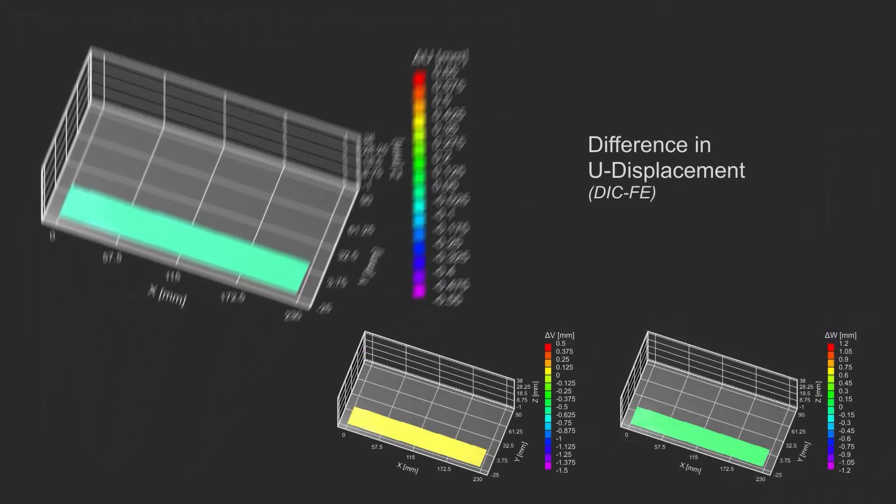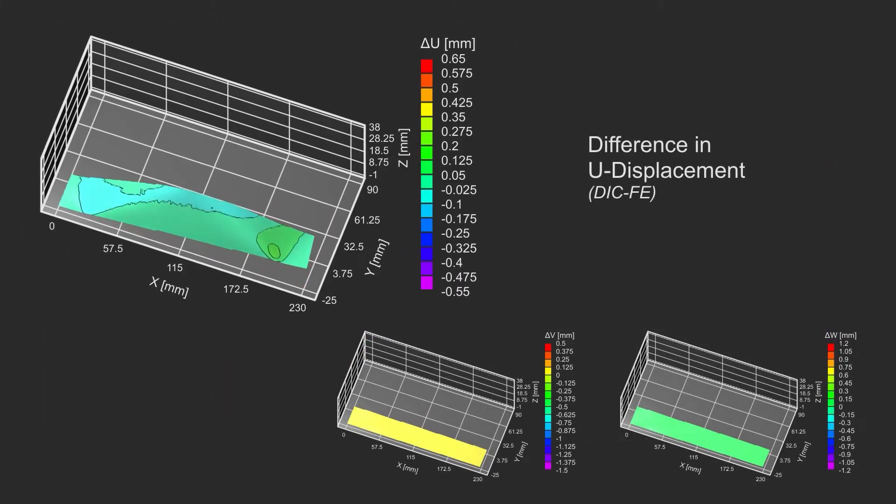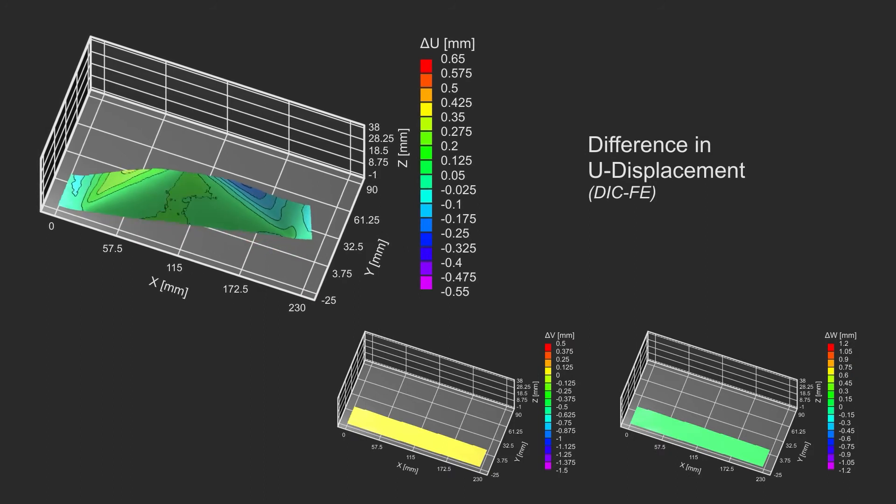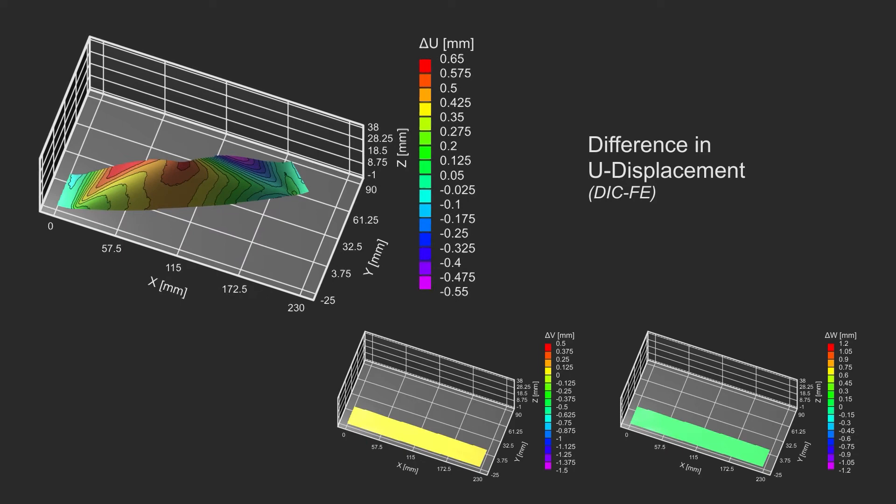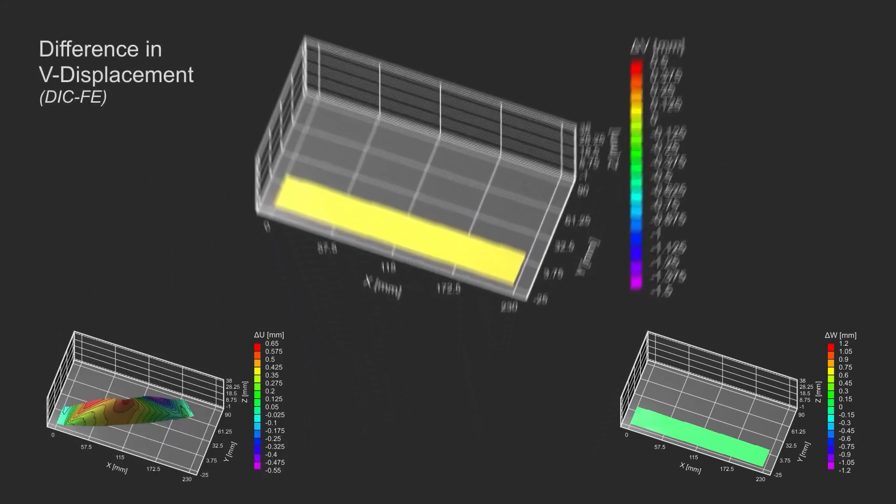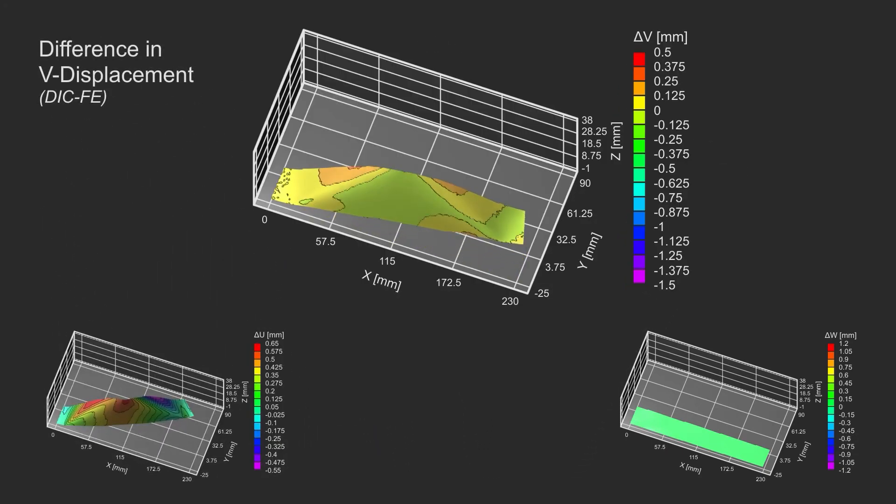When we look at the difference plots, things are more interesting. Here, we see differences in all three displacement components, with magnitudes on the order of a half a millimeter to one and a half millimeters. The deviations are close to zero near the edges, which is to be expected because the boundary conditions were taken from the DIC measurements.